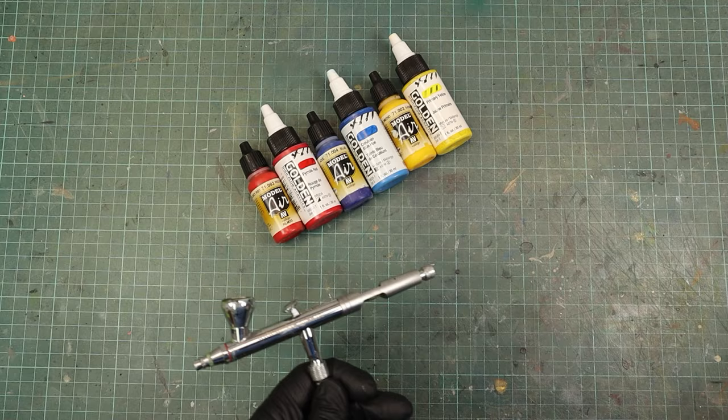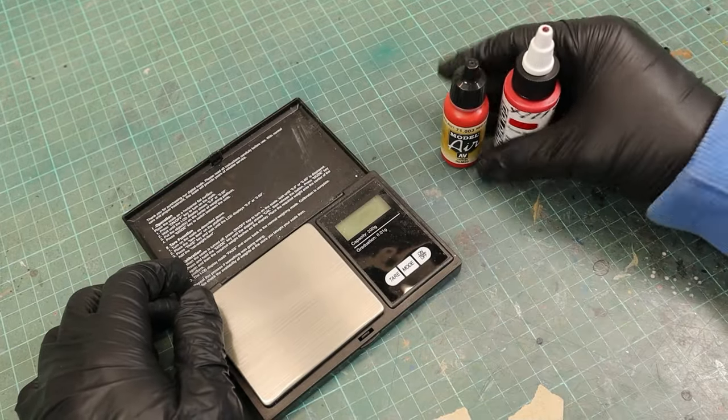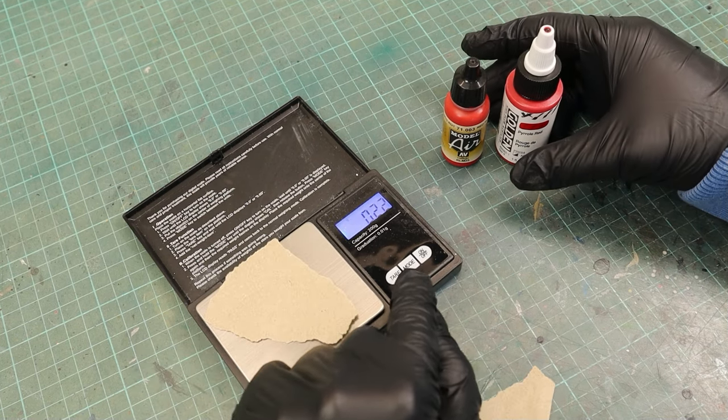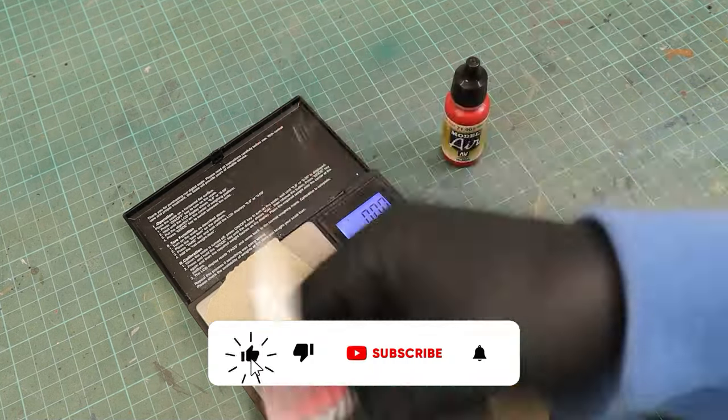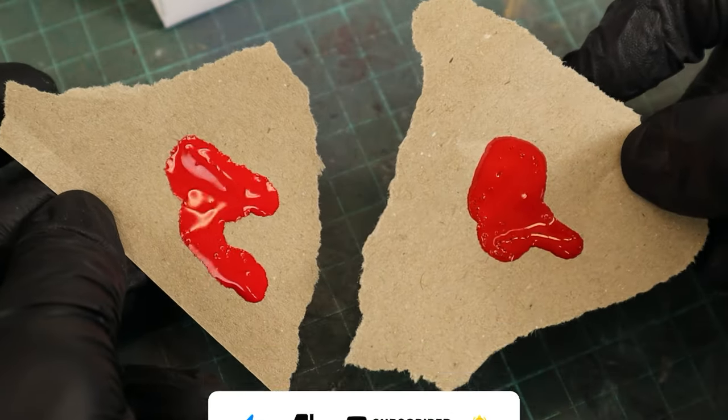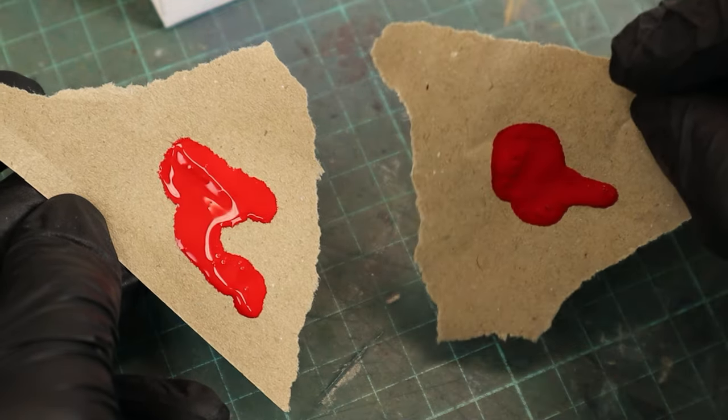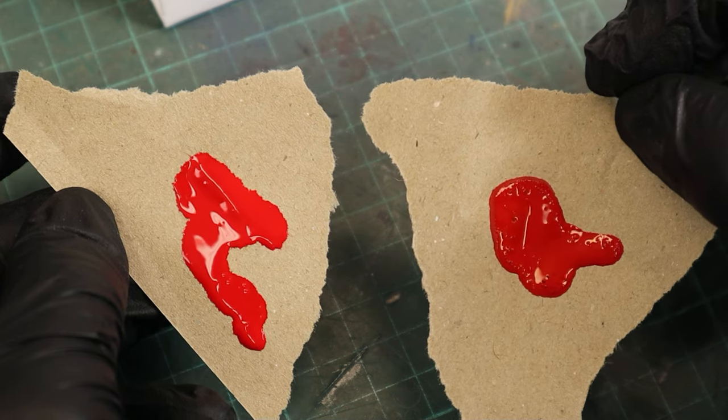To ensure a fair comparison, I verified the consistency of paint droplets from each bottle using a micro scale. One difference I noticed while shaking the bottles was that the golden acrylics have a ball inside the bottle, whereas the Vallejos don't. Another noticeable difference is that the paint coming out of the Vallejo bottles have way more air bubbles.